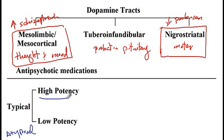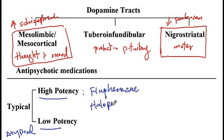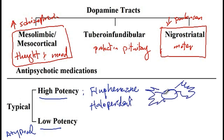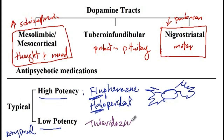Typical antipsychotics are divided into two types: high potency and low potency. Examples of high potency typical antipsychotics include fluphenazine and haloperidol. The mnemonic is a halo with wings — flying goes for fluphenazine, and halo goes for haloperidol. The low potency antipsychotics include thioridazine and chlorpromazine.